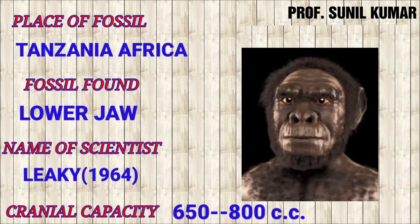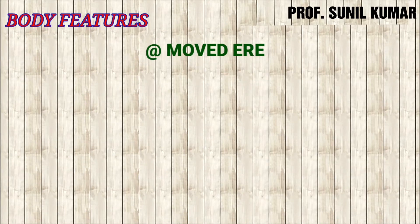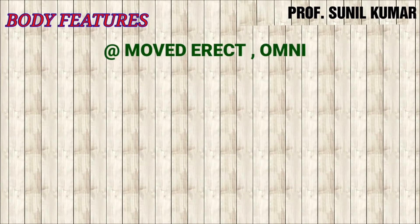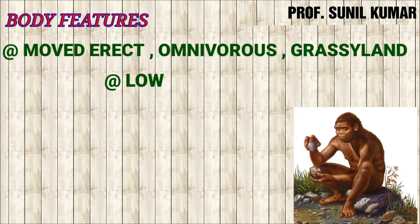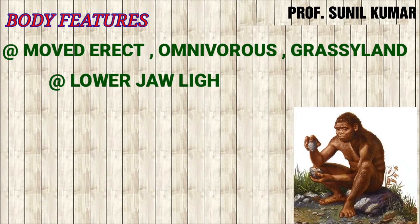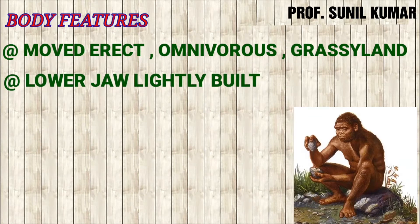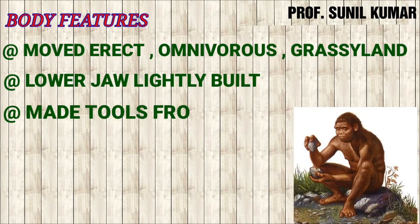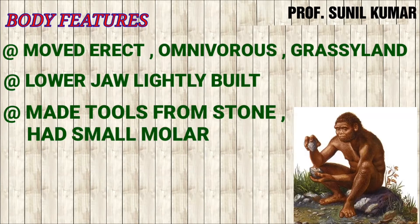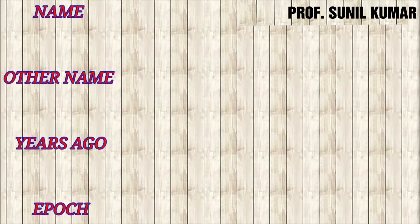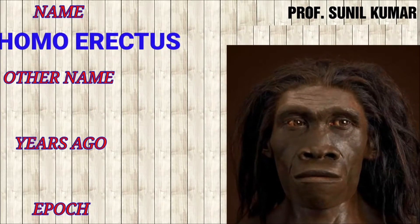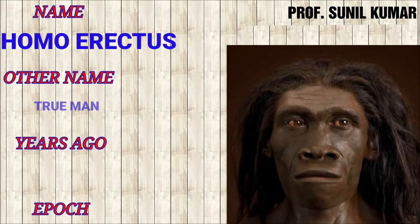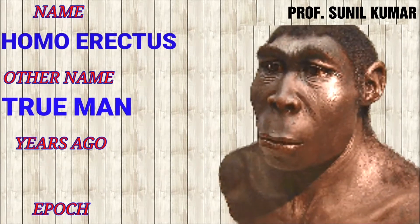Homo habilis showed a cranial capacity of 650 to 800 cc, meaning they were a little bit more intelligent. Body features: they moved upright, were bipedal, omnivorous, and lived in grasslands. Their lower jaw was lightly built, and they started making tools from stones for hunting. They had small molar teeth.